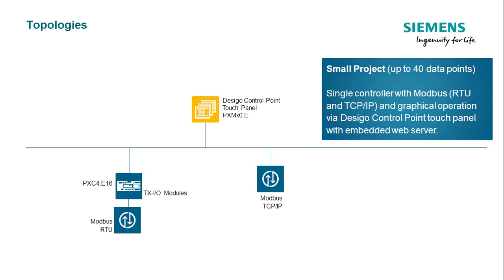When a smart building management system is to be set up, a DSEGO control point with embedded web server can be used to have efficient monitoring and graphical operating. In case of proper network setup, Modbus TCP/IP can also be used along with Modbus RTU.